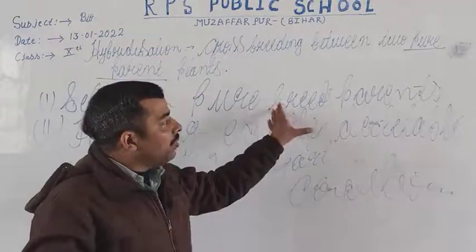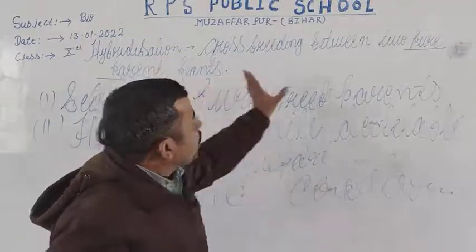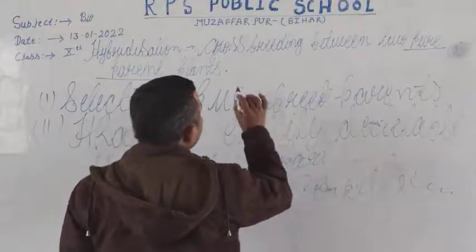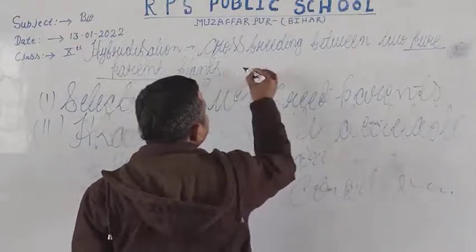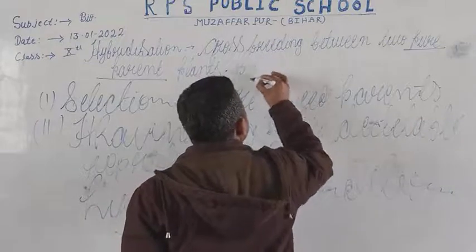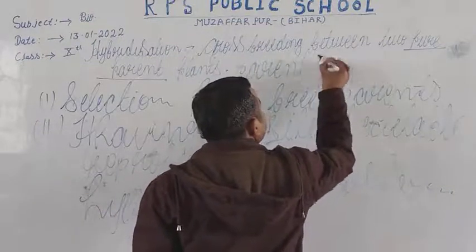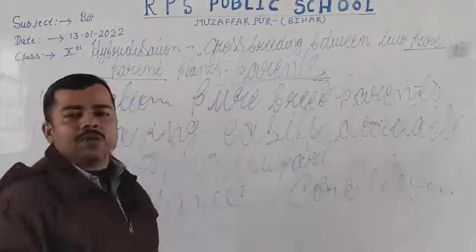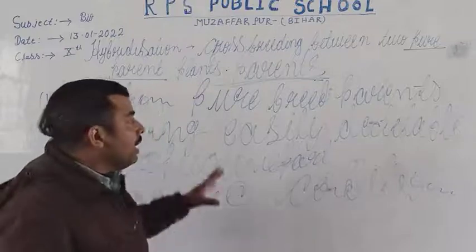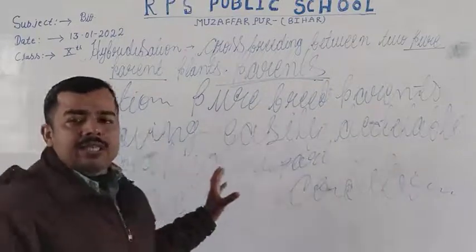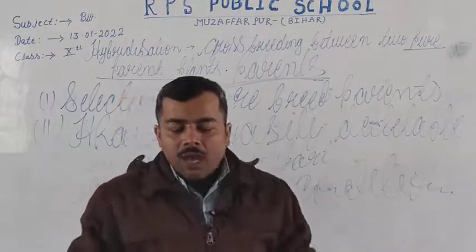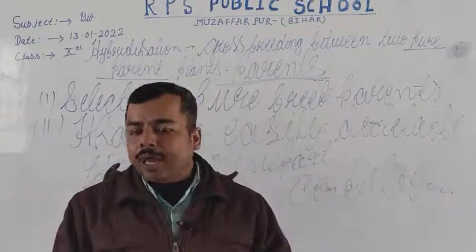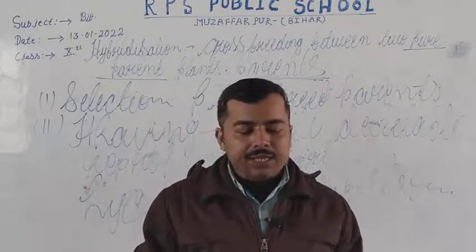Now we must keep in mind that in cross-breeding, two pure parents are involved. In Pisum sativum, these pure parent plants are the ones for which the hybridization process will be performed. When we cross-breed between two pure parents, we get the next generation.